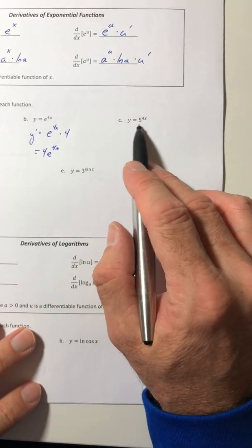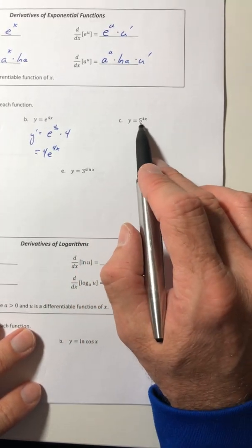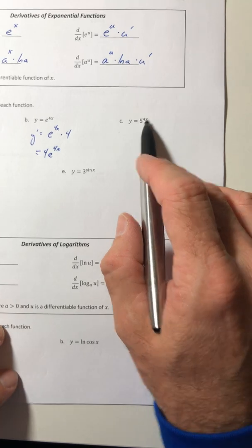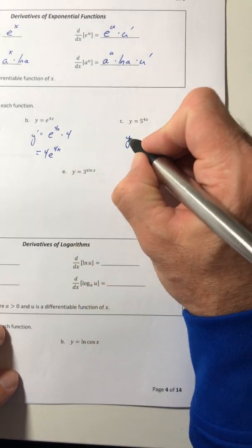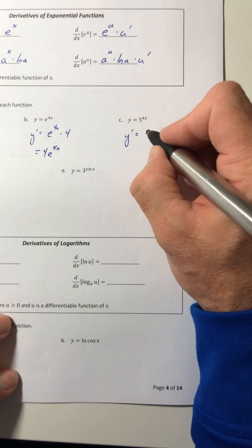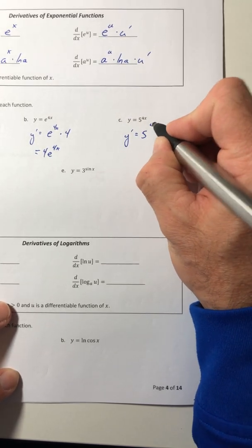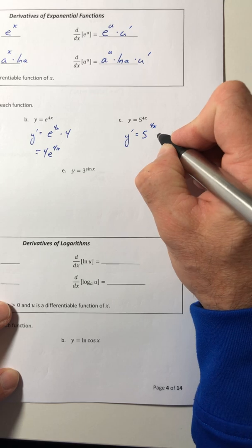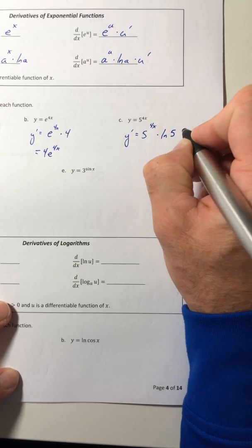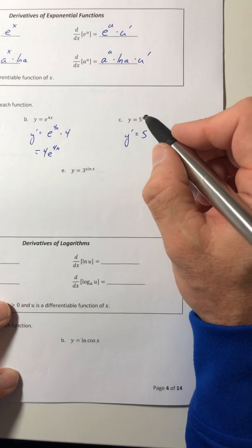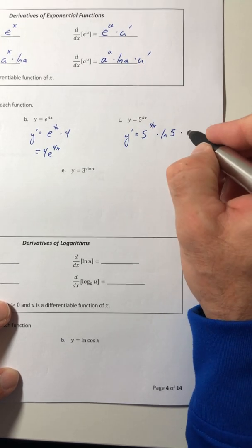Okay, part c. It's still exponential but the base is a 5, it's not an e, so now I've got to use this thing right here. So recopy the function.